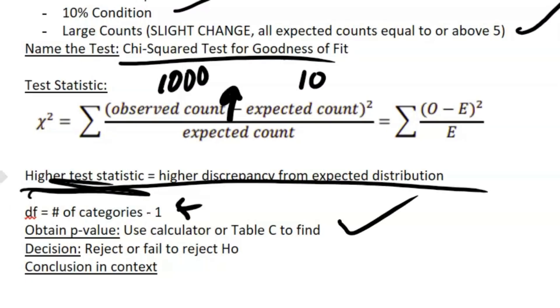Then we're going to obtain our p-value. You can use Table C or you can just use your calculator—pretty simple. Then you're going to make a decision: are you going to reject or fail to reject H₀? And then you're going to conclude in context. When you're concluding in context, you want to refer back to Hₐ and say Hₐ explicitly in context.